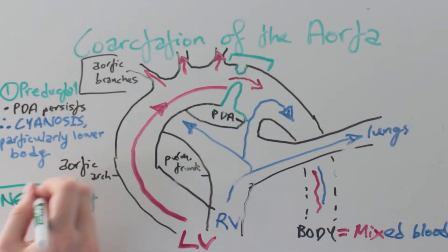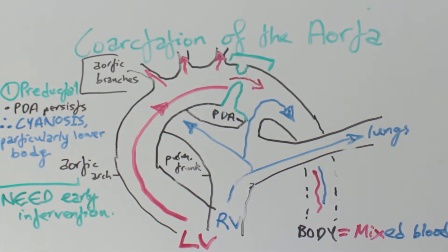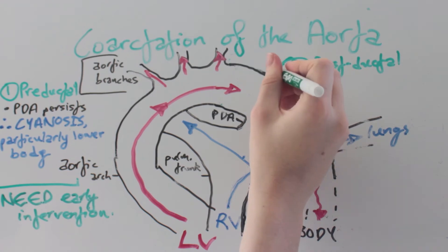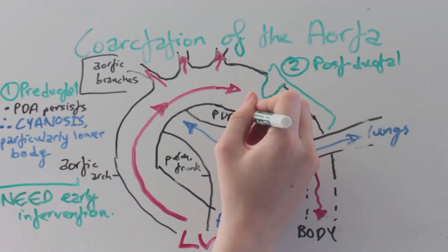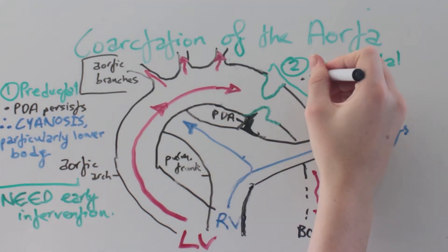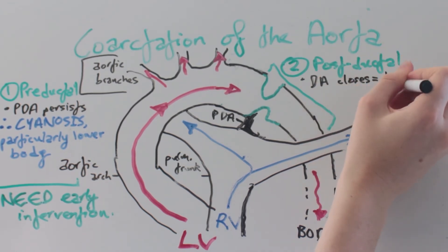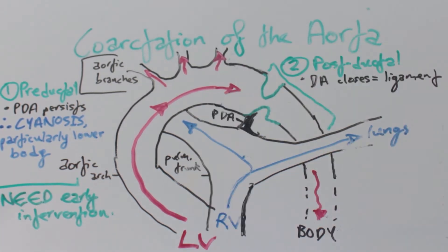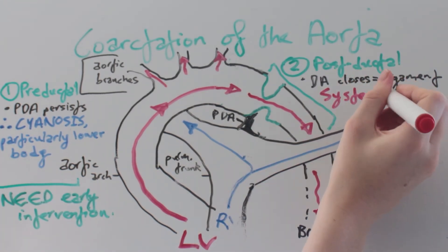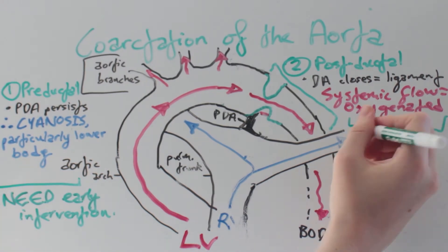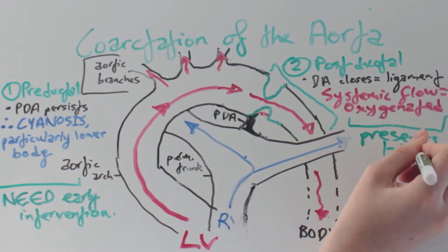This defect requires early intervention for survival. The second and more common type of coarctation is post-ductal, occurring in the aorta distal to the ductus arteriosus. In this type, the ductus closes after birth to form the ligamentum arteriosum. The blood coming through the aortic narrowing to reach the system is fully oxygenated, but the flow is reduced. These usually present later in life.